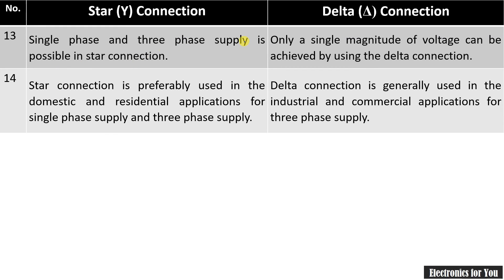Both single-phase and three-phase supply are possible in case of star connection. We can obtain single phase from a phase wire and the neutral wire, and three-phase supply is also possible. Whereas in case of delta connection, only three-phase voltage is possible because there is no neutral wire.